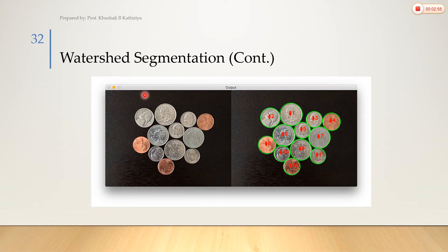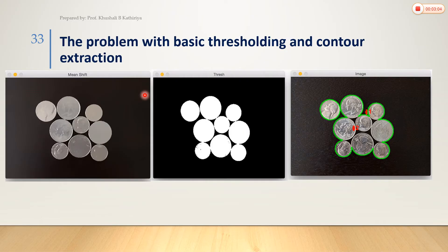If we use classic techniques like thresholding or active contouring, we can attempt segmentation. However, to apply these methods we need to apply smoothing or a mean filter on the image before processing.